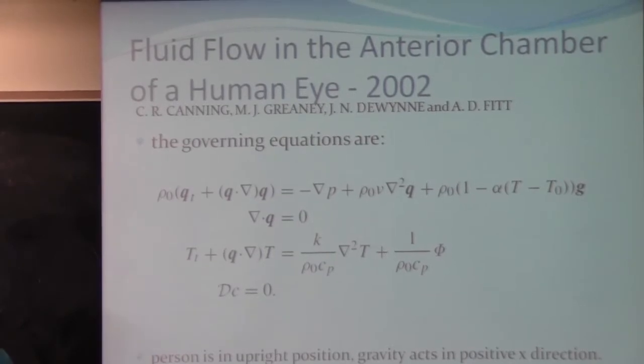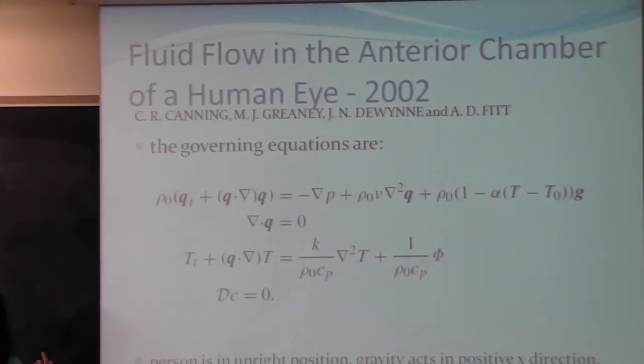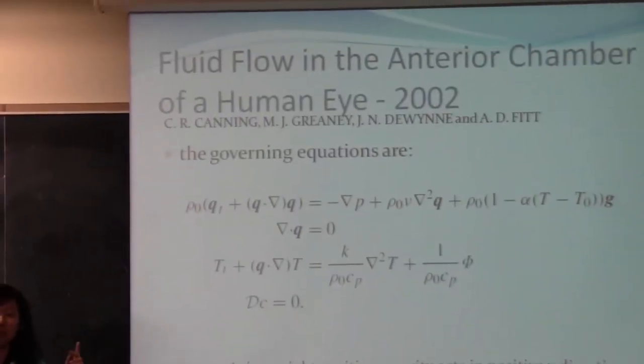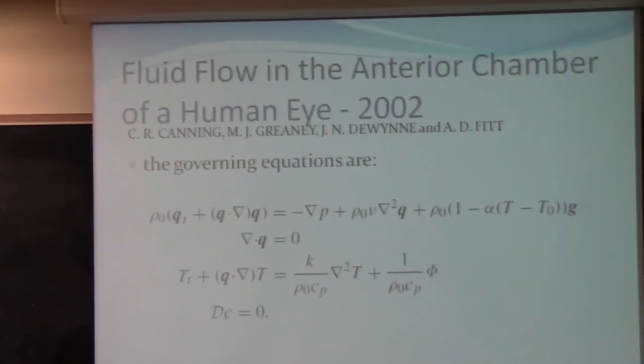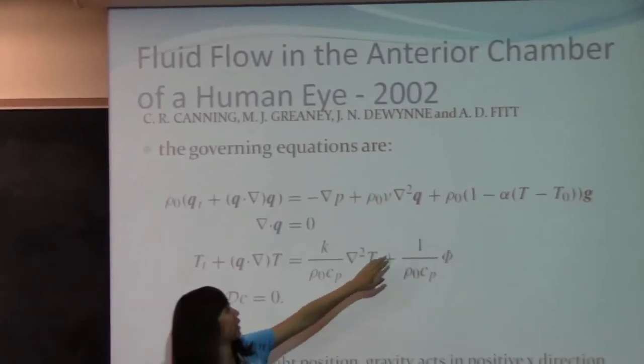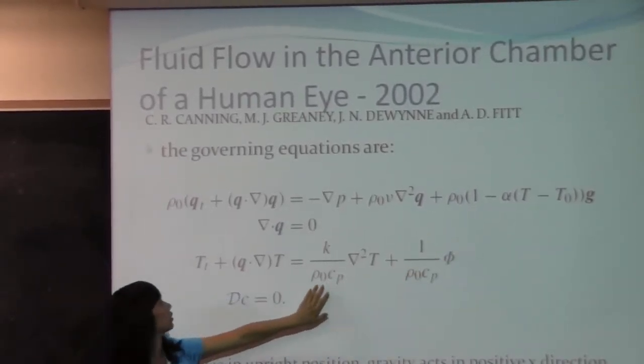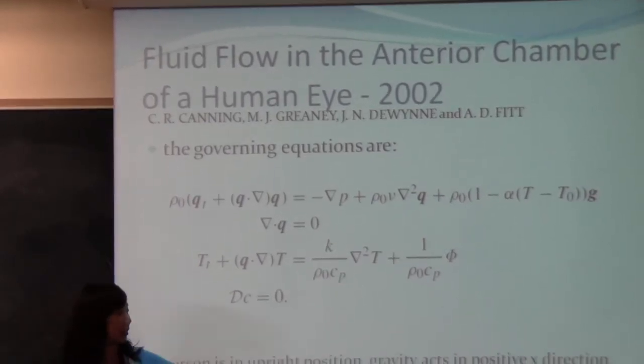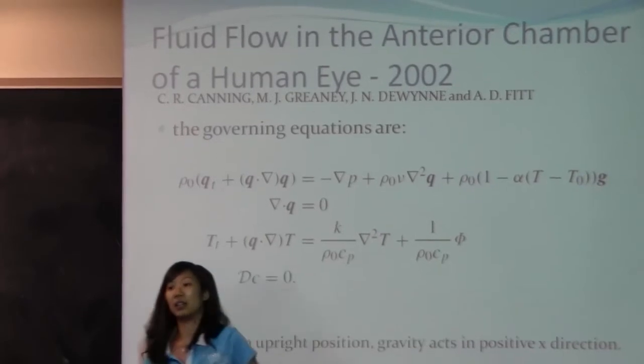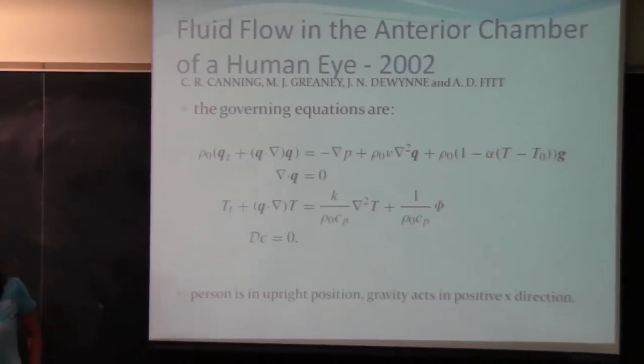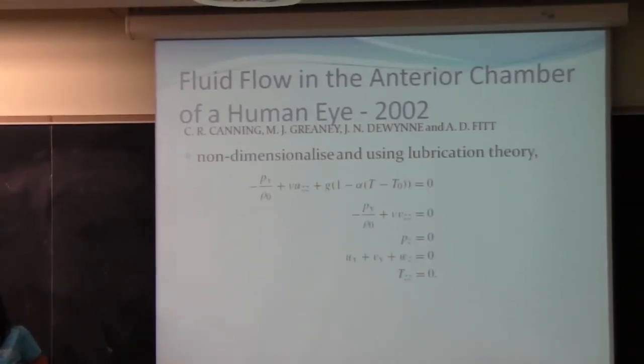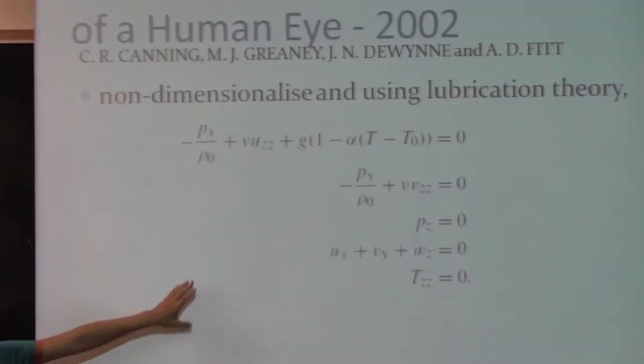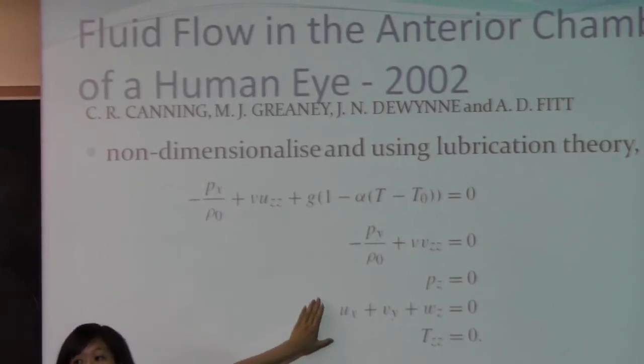Which is, as Vishal mentioned at the beginning, that Navier-Stokes equation can only use for isothermal flow, which means that when the temperature is the same. However, as I mentioned from the beginning, there is a temperature gradient. So this part takes care of that along with the secretion here. Now, their axis is that the person is standing in an upright position and gravity here acting the positive x direction. So what they did is that they non-dimensionalized and using lubrication theory, they reduced their equation to five simple equations here.